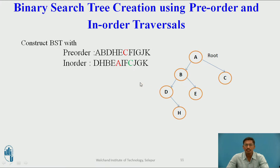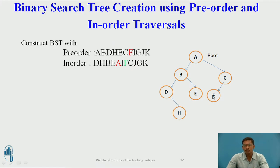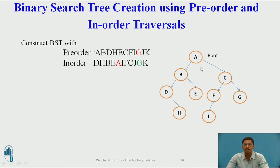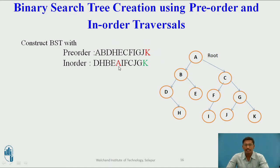Next node C is on the right side of A in in-order, so C is the right child of A. Node F is on the right of A and left of C, so F is in the right subtree of A and left subtree of C. Node I is on the right of A and left of F, so I is in the left subtree of F. Node G is on the right of A and right of C, so G is in the right subtree of C. Node J is on the right of A and left of G, so J is in the left subtree of G. Finally, node K is on the right of A and right of G, making K the rightmost node.